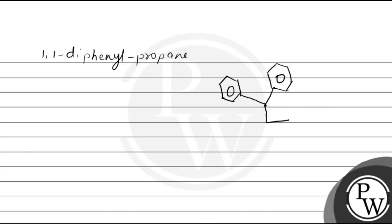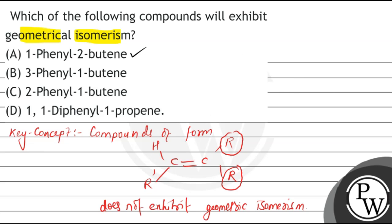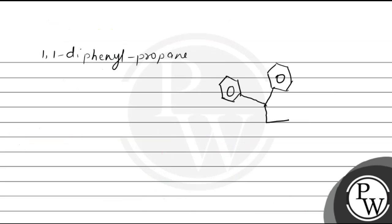Let's check the options. Option B is incorrect, option C is incorrect, and option D is incorrect. So only 1-phenyl-2-butene exhibits geometrical isomerism. Option A is the correct answer. Hope you all understand. Thank you.